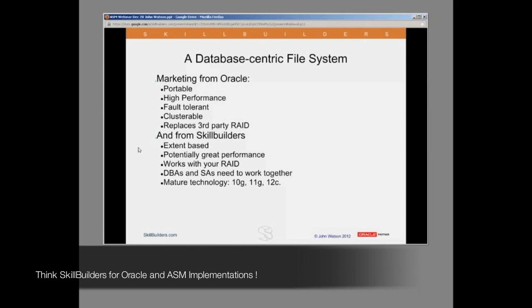Our experience is slightly different. One thing I definitely want to emphasize that isn't properly documented anywhere is the extent-based nature of ASM. Extent-based file systems are beginning to come into use. Those of you who work with Linux will know that with Linux 6 we have the ext4 file system, which is extent-based. Going from ext3 to ext4 shows you how powerful extent-based file systems can be for performance. The performance of ASM, largely because it is extent-based, is potentially great — but only if it's configured appropriately with your hardware and with your RDBMS database.